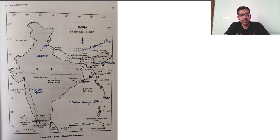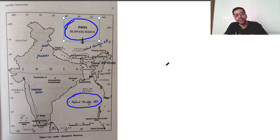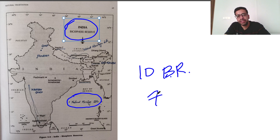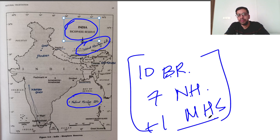Let's see another example. This is the Class 11 NCERT — the Geography NCERT. This page has a map of Biosphere Reserves. What I did was mark the natural heritage sites on it. In India, there are 10 Biosphere Reserves and 7 natural heritage sites plus 1 mixed heritage site. I have written about the mixed heritage site and remembered all of this through just one map.